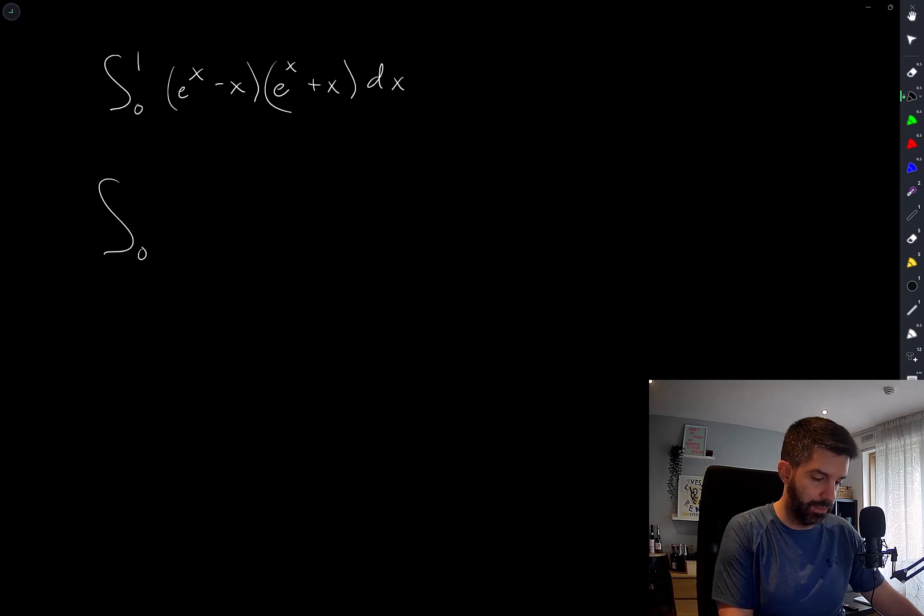So by simply expanding this, I get e^(2x) + xe^x - xe^x - x^2.